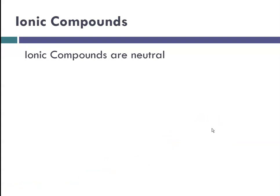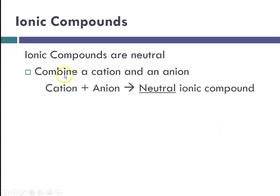The reason I'm stressing that compounds are neutral, when you're talking about ionic compounds, you have to make sure that the formula you write represents a neutral compound. That means you're combining a cation and an anion. The charges have to add up to zero. So the charge of the cation plus the charge of the anion equals zero, and that results in a neutral ionic compound.